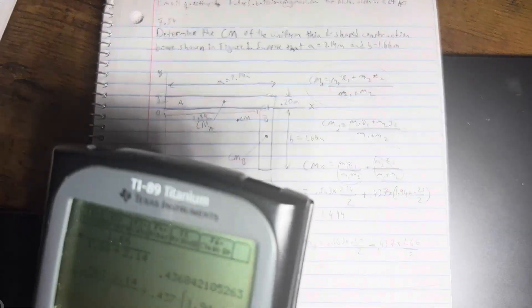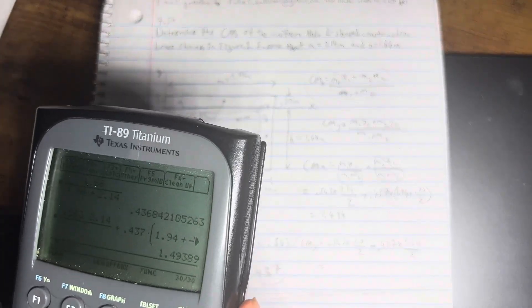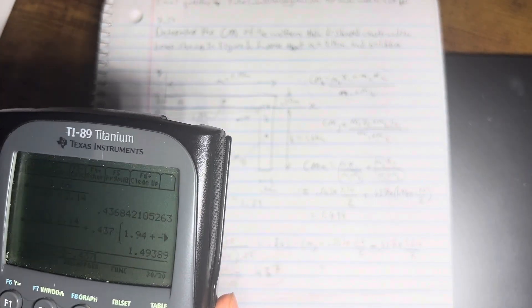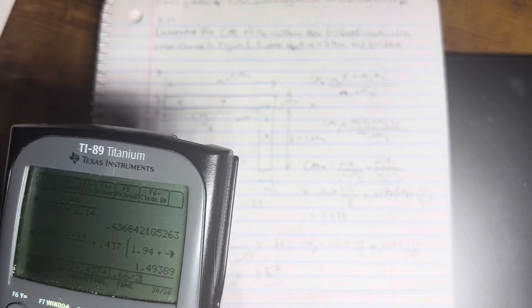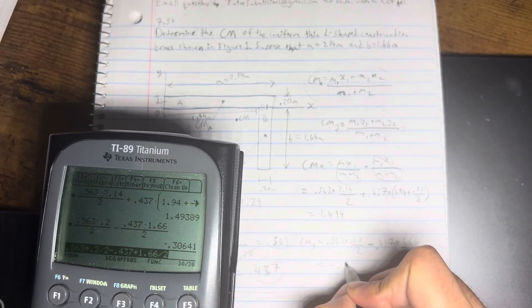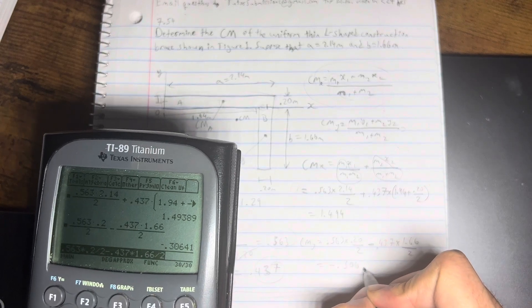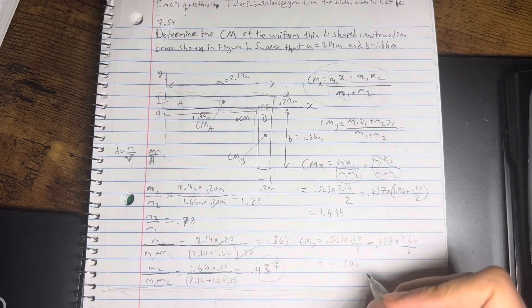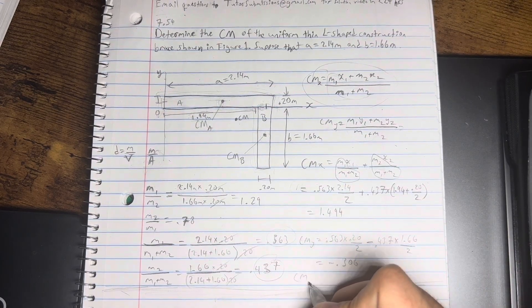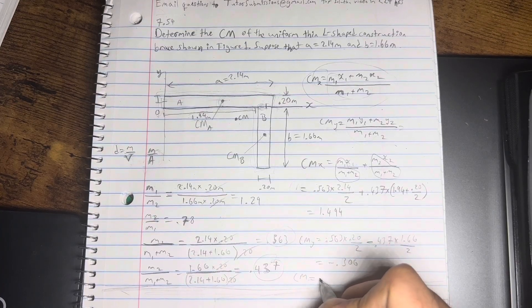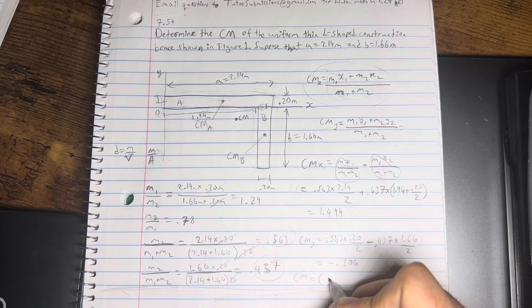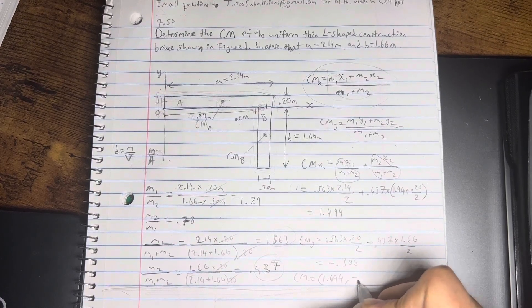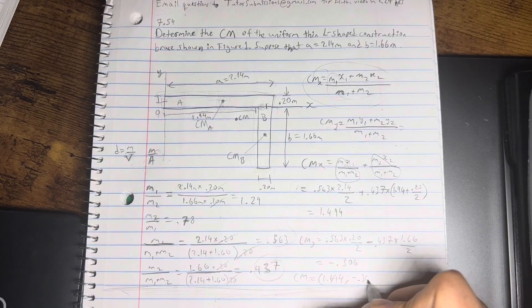All right, so that will give us negative 0.306. So, I believe that gives us our final answer. So, the center of mass is going to be equal to an xy-coordinate form, 1.494 comma negative 0.306.